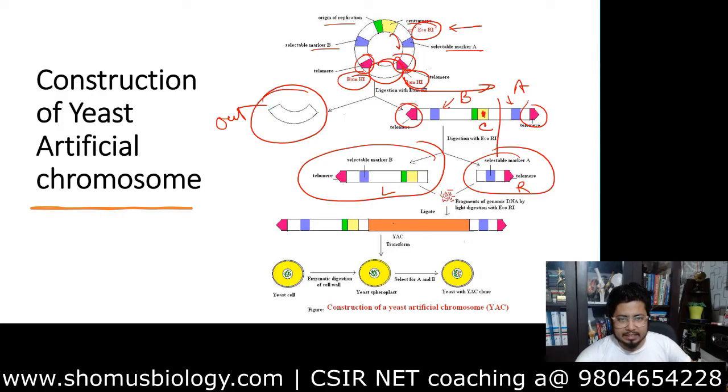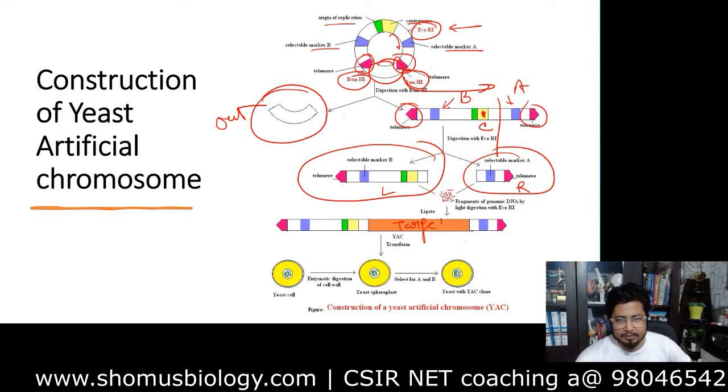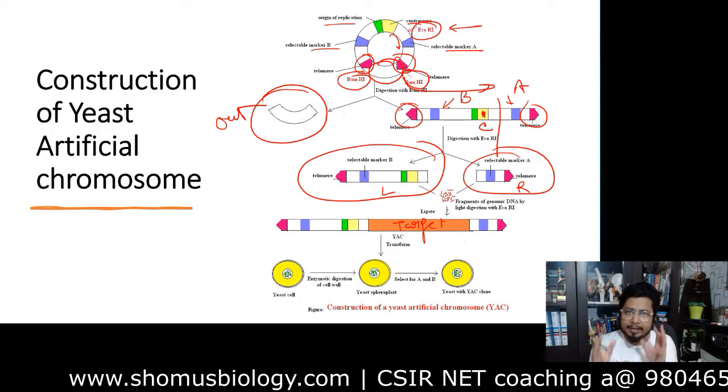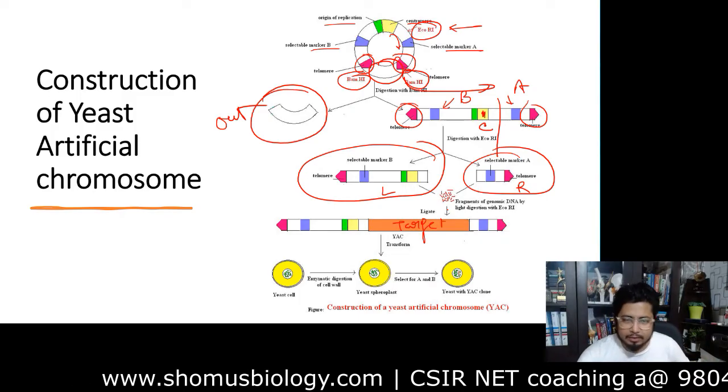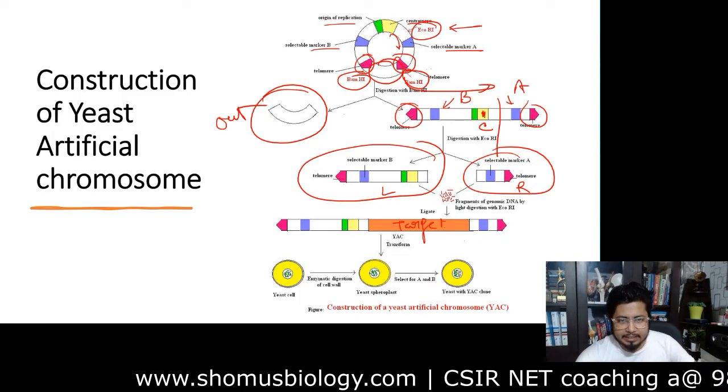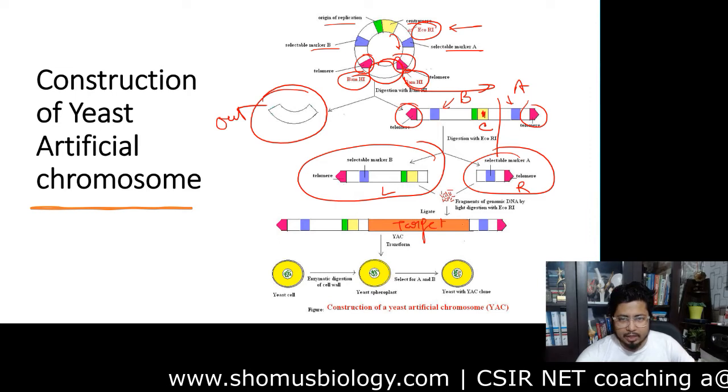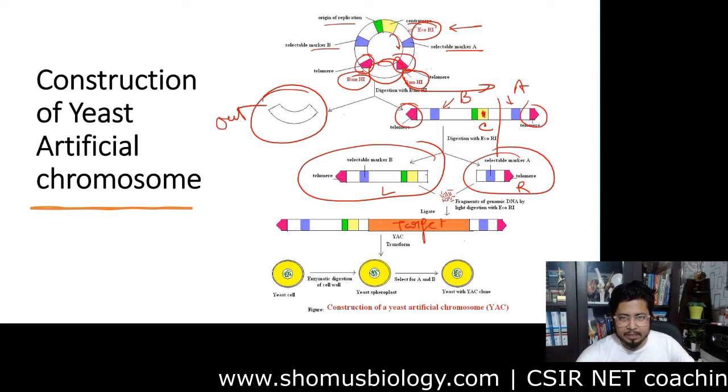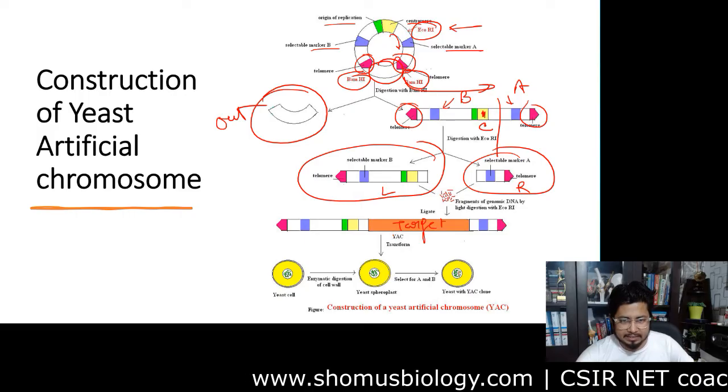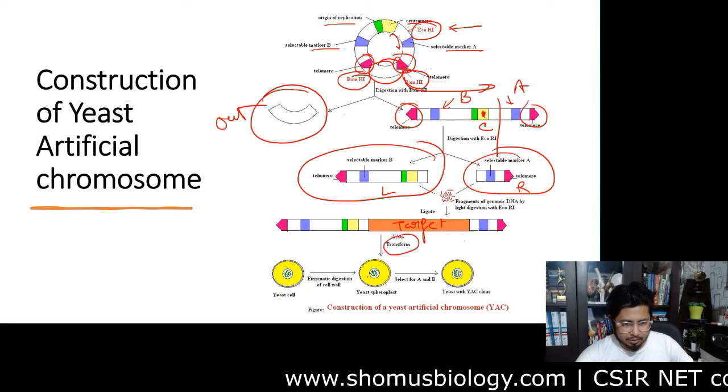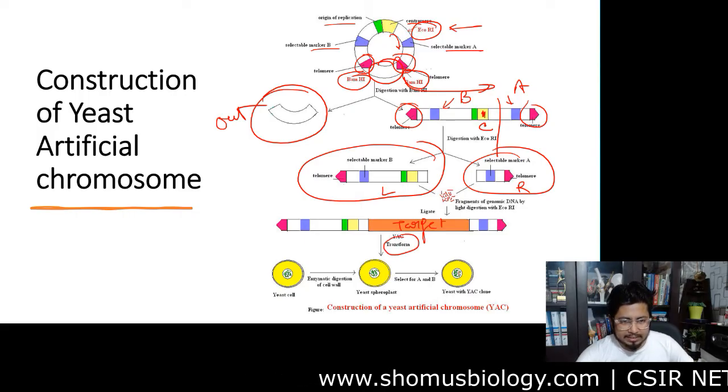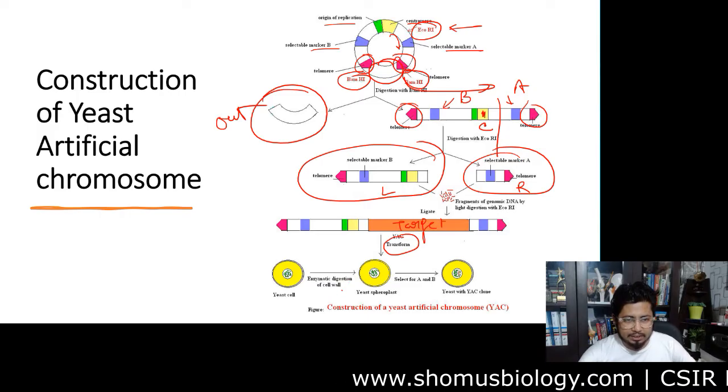Now we can attach a target DNA of our interest. DNA which is eukaryotic gene, generally lengthier gene. Eukaryotic DNA segment is added. This shaded orange color segment is added and attached. Once the attachment is done, then transformation is also performed. Transformation is done. Enzymatic digestion of the cell wall for the Yeast cell is done.